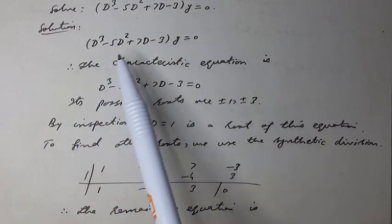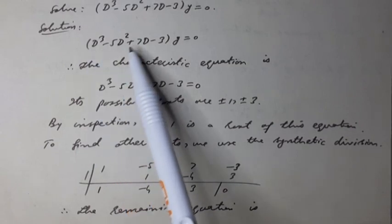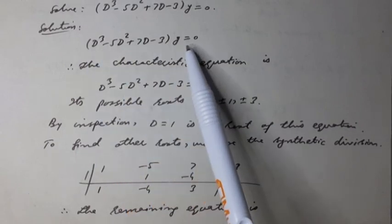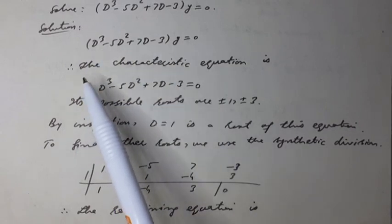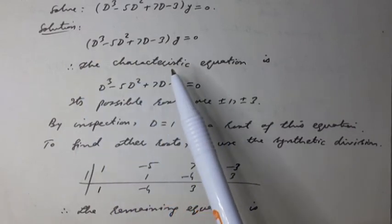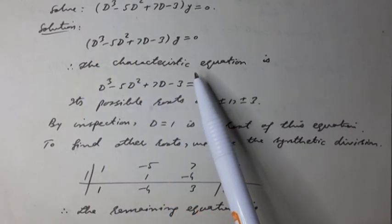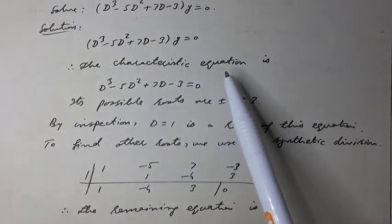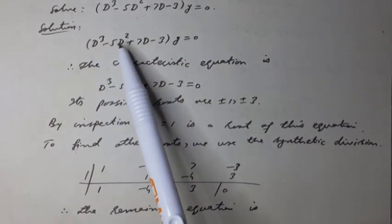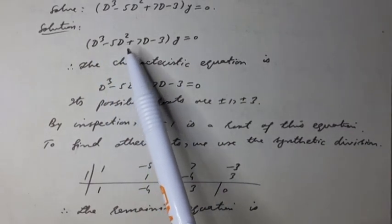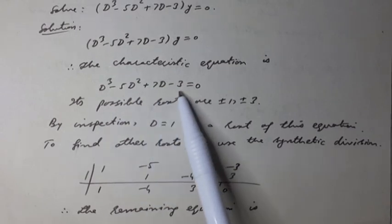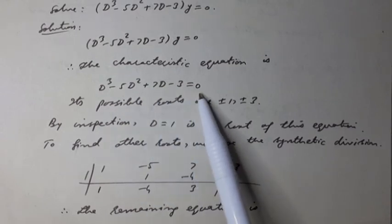The given differential equation is of the standard form. Therefore, the characteristic equation or auxiliary equation is: D³ minus 5D² plus 7D minus 3 equals 0.